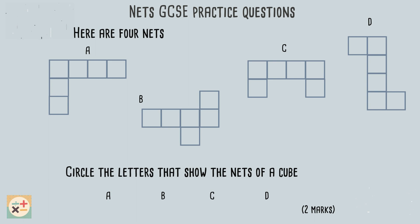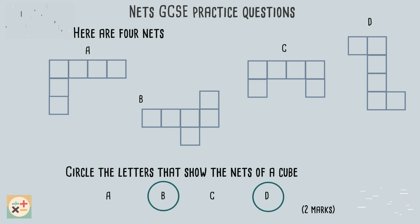Try to visualize the rest of these nets in a similar way and pause the video while you do this. Remember there may be more than one way to fold these nets up. If you are finding this challenging, try using a piece of paper cut into the same shape as the net. So we can see that nets B and D are the ones which will form a cube.